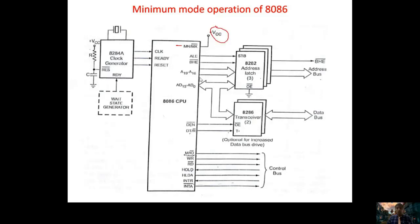In 8086 we have 21 multiplexed address and data lines: AD0 to AD15, which are 16 multiplexed lines. Similarly A16/S3 to A19/S6 are also multiplexed — that is 4 more. And BHE̅/S7 is also multiplexed, giving us 21 multiplexed lines total. These lines are passed through latches. We take three latches because each latch can separate only 8 lines, and we have 21 multiplexed lines, so we need three latches.